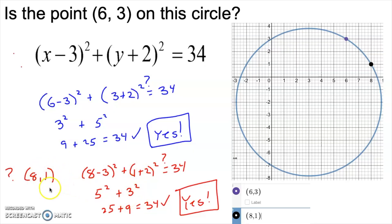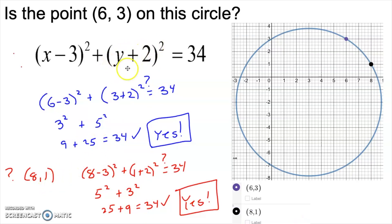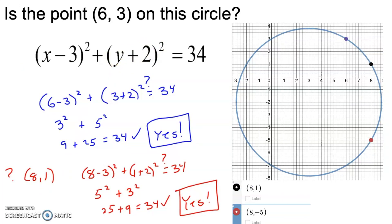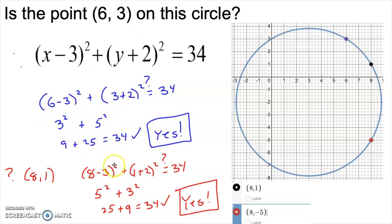This worked because x = 8 gave us 5 and y = 1 gave us 3. What else could give 3 for the y term? We could also use negative 5 — and that point lands right on the circle too. Once you have the equation of a circle, it's easy to find many other points on it. To test whether a point is on a circle, simply plug in the x and y coordinates.